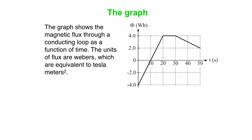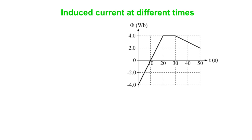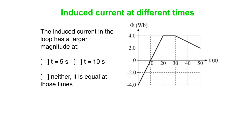So there's our graph of flux versus time. Question: the induced current in the loop has a larger magnitude at t equals 5 seconds or t equals 10 seconds? Or maybe it's neither. You might want to pause the video for a second and think about it.